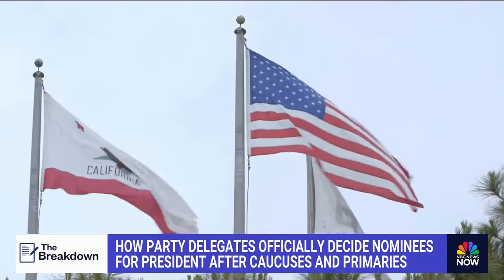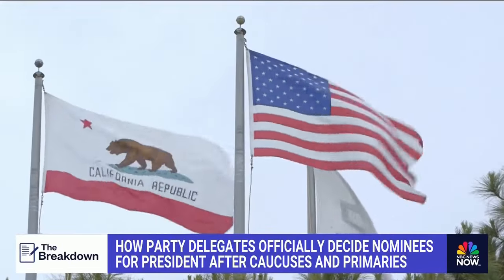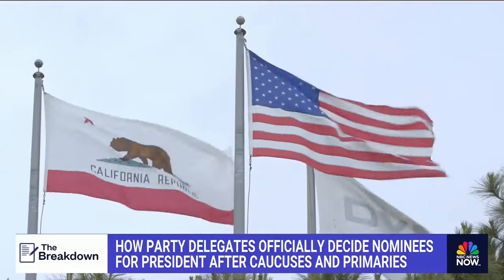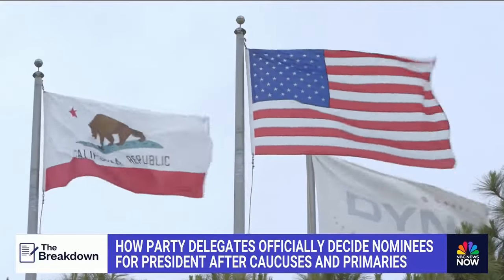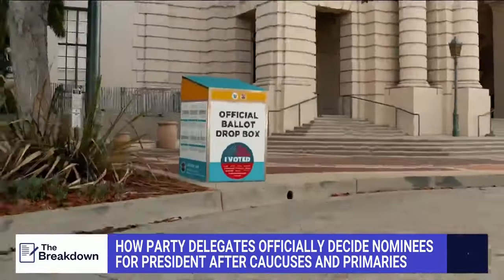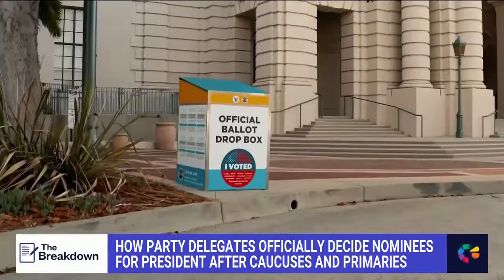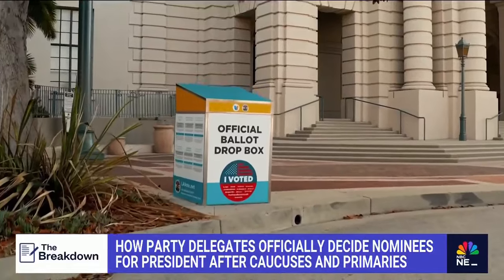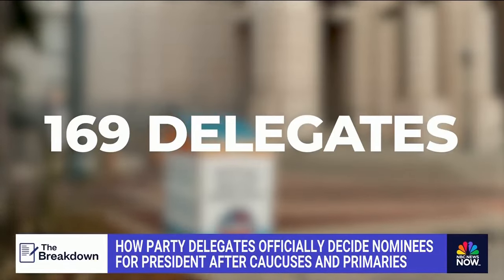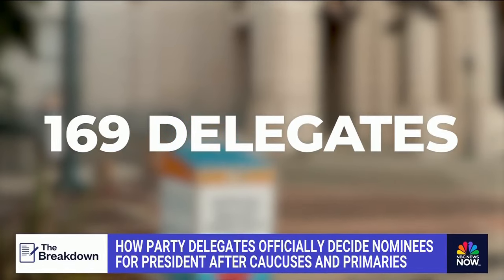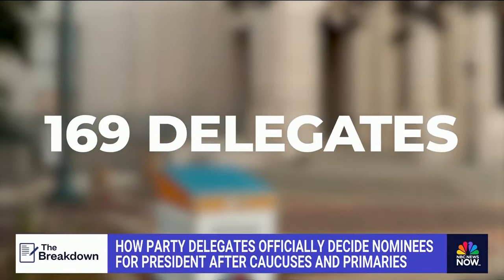California's GOP, for example, adopted new rules ahead of this cycle. Any Republican candidate who wins more than half the vote there will get all the delegates. And California has 169 of them — more than any other state.